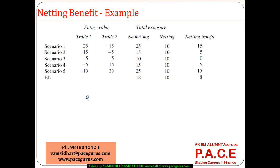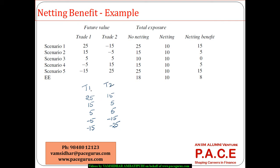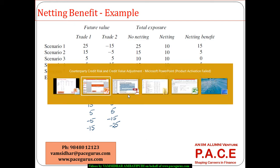Let me create a scenario: trade 1 has values 25, 15, 5, minus 5, minus 15 and trade 2 has values 15, 5, 5, minus 15, minus 25. These are the future values of these two trades.